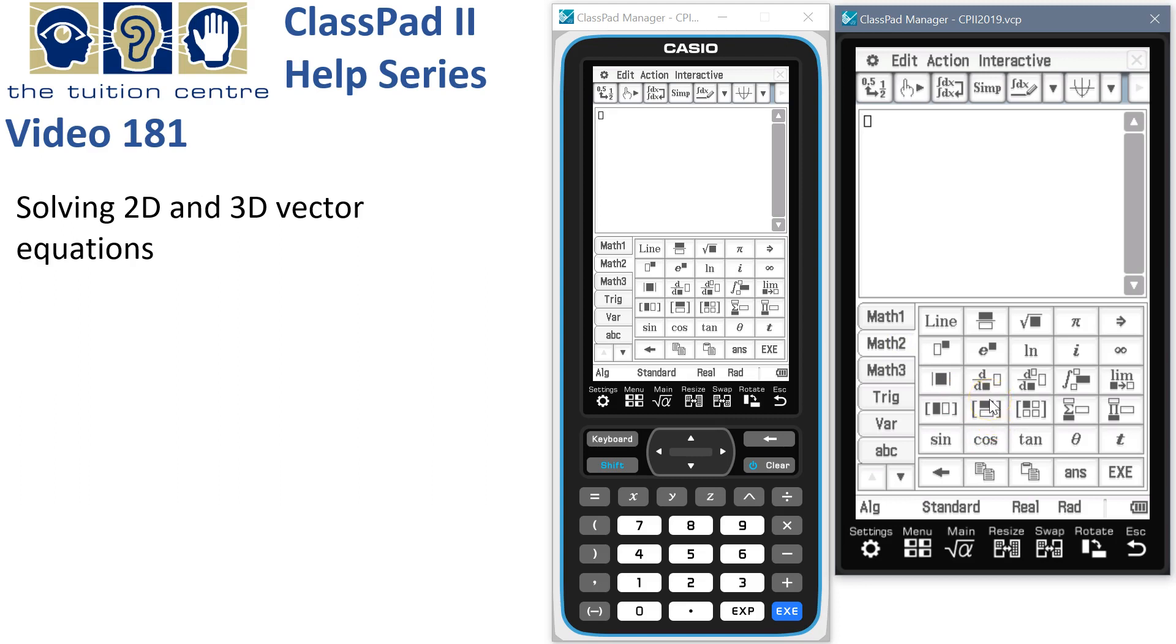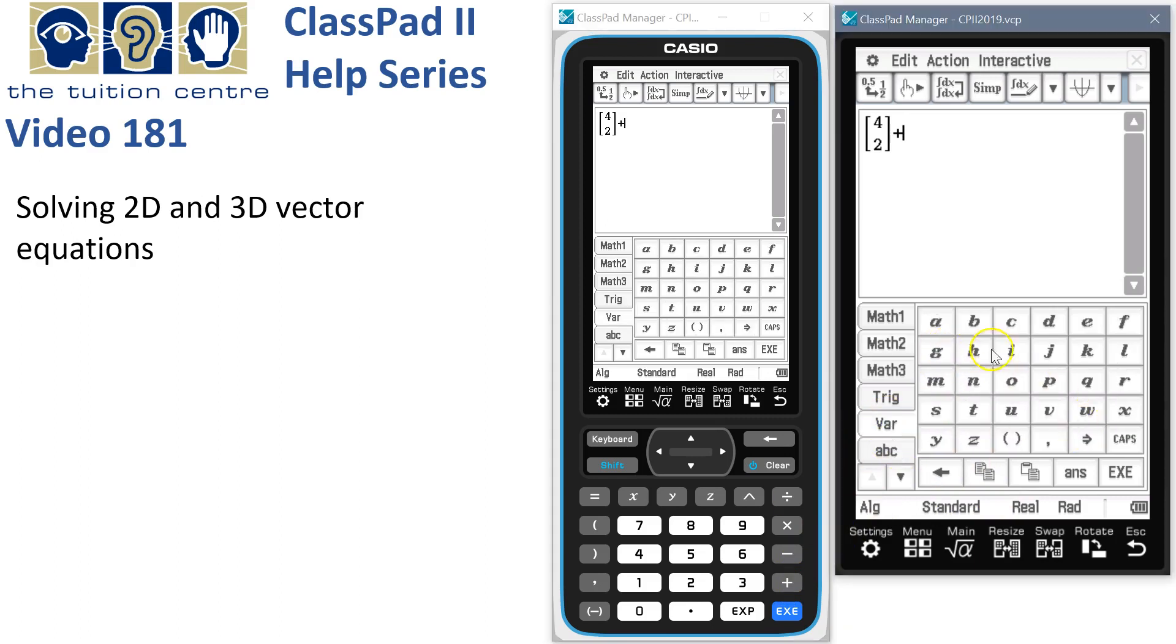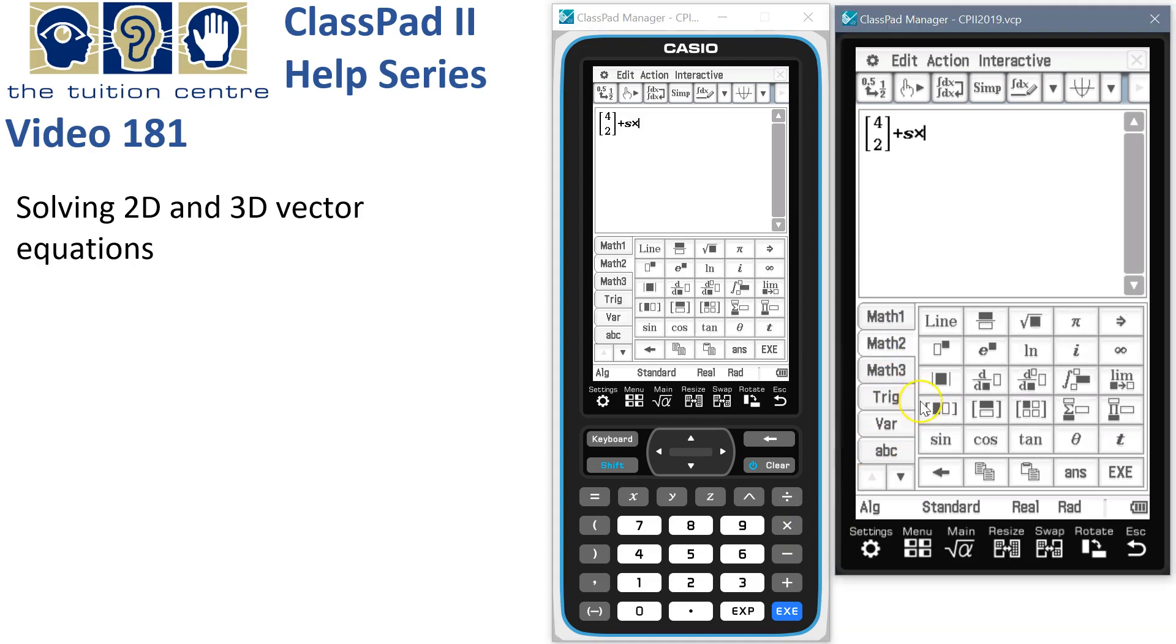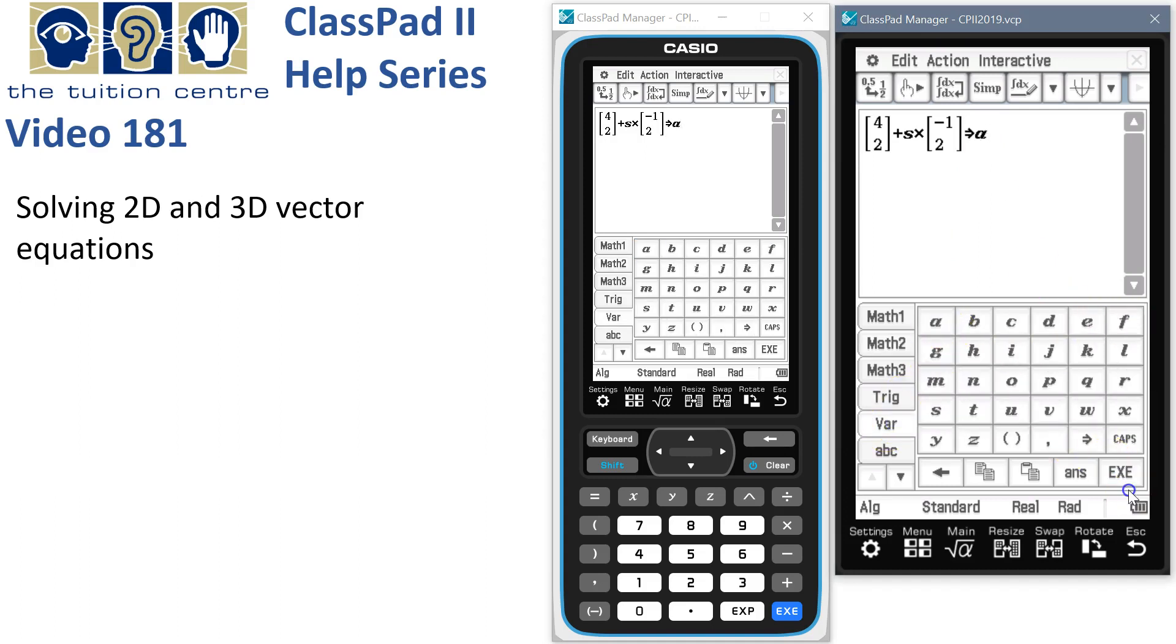Here we've got particle A. It's leaving from 2. Let's use S. This is the time for the first one multiplied by its velocity, which is negative 1 over 2. We'll store that into variable A.